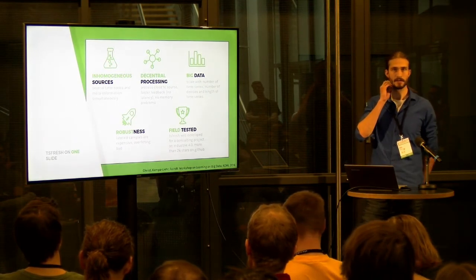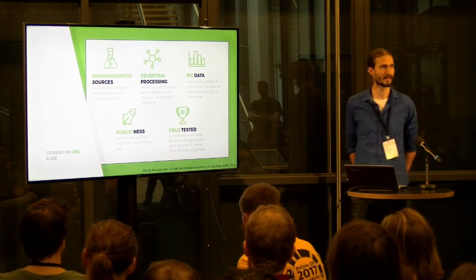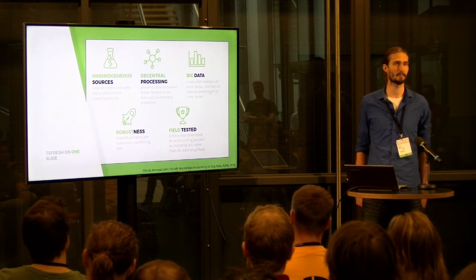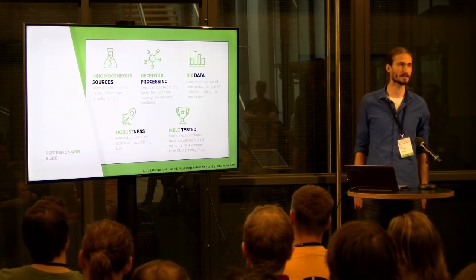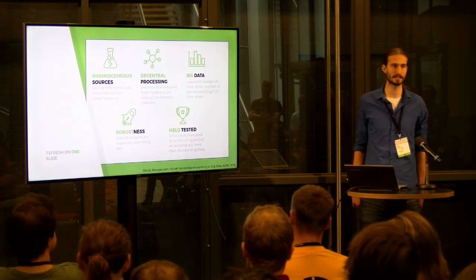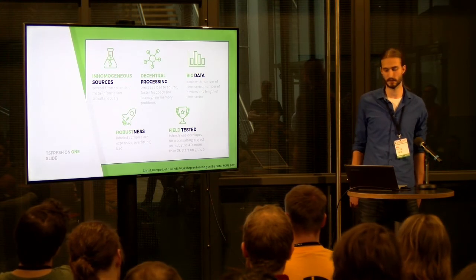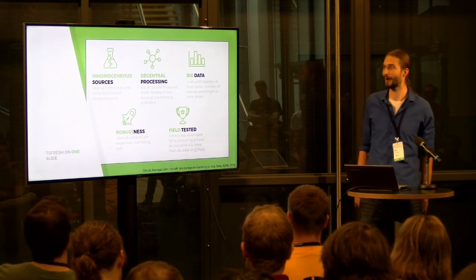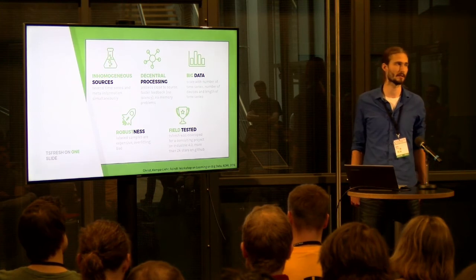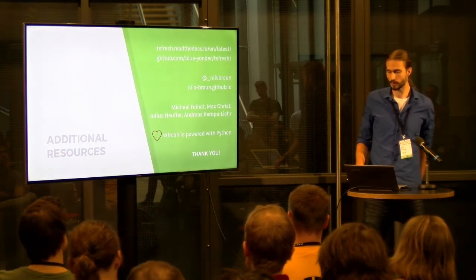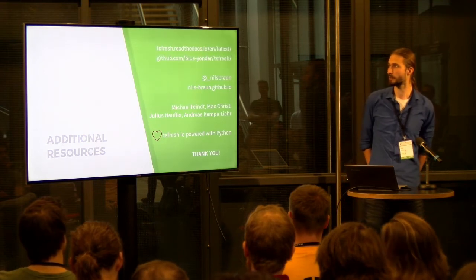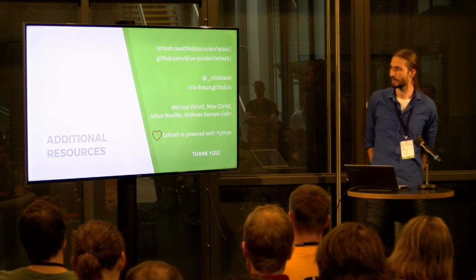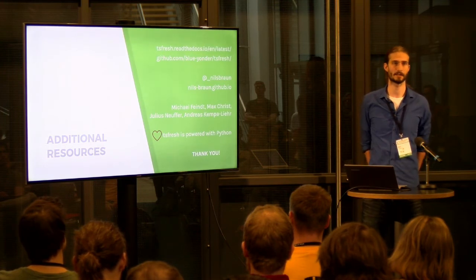Let me summarize. Now you're not rich, but you know how to get rich maybe. I've presented TSFresh — a feature extraction and selection Python package. It can handle inhomogeneous sources of different lengths, it's ready for decentral processing and big data because of cloud computing, it's field-tested because it was developed for a consulting project in Industry 4.0, with now more than 2,000 stars. And it's robust because it can handle overfitting through feature selection. You can find more information on the docs page and our GitHub repository. I want to thank all the contributors to TSFresh, especially the top four — Max, Julius, Andreas, and Michael Feind — for helping with the idea for this project.